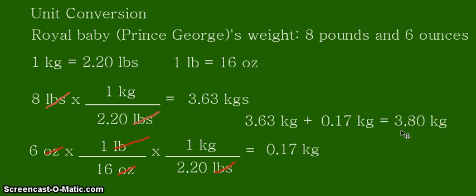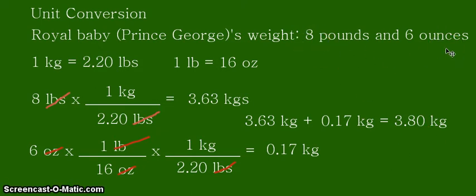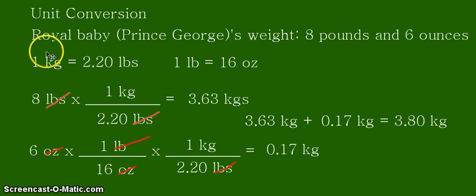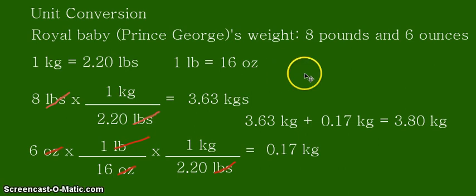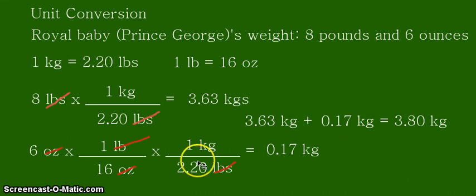Remember, for your final answer you have to determine the correct number of significant figures. Since we are only given 8 pounds and 6 ounces, for a more accurate measurement it should have decimal places — that is why we are using at least two decimal places here. The equivalent statements are not used in determining significant figures; base it only on the given values. We are adding two decimal places for greater accuracy. That's all for this video — thank you for listening and continue learning.